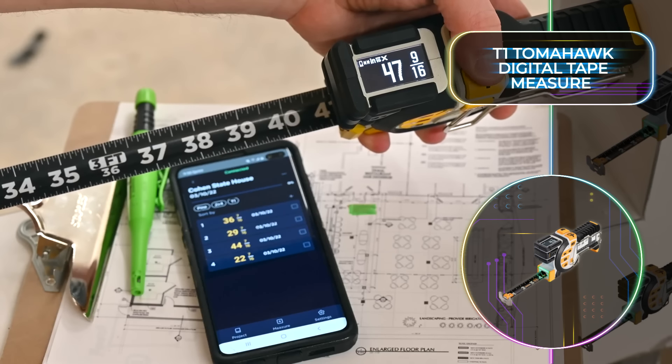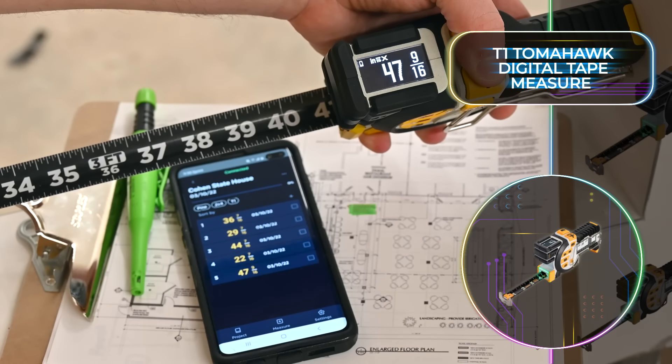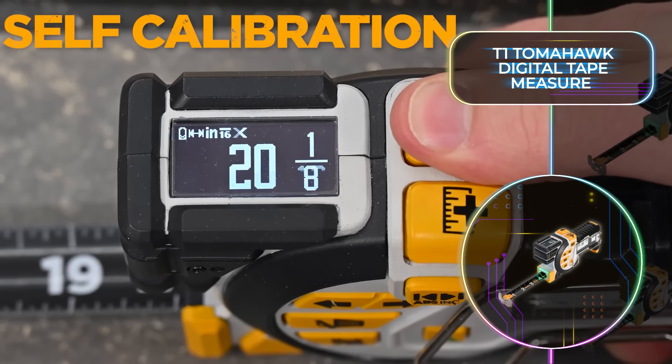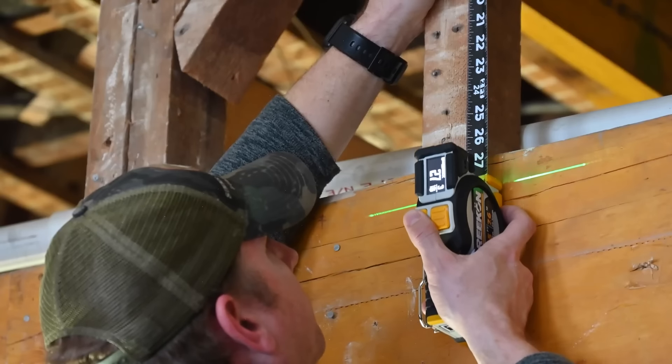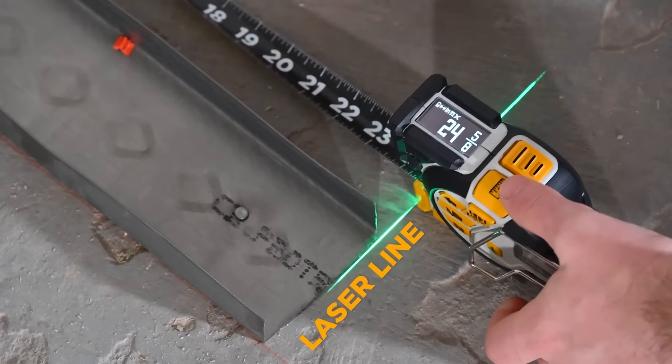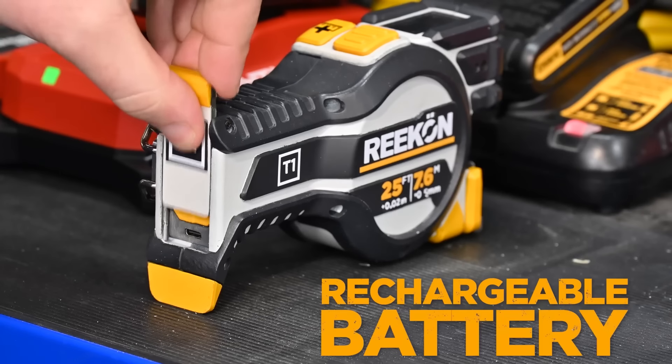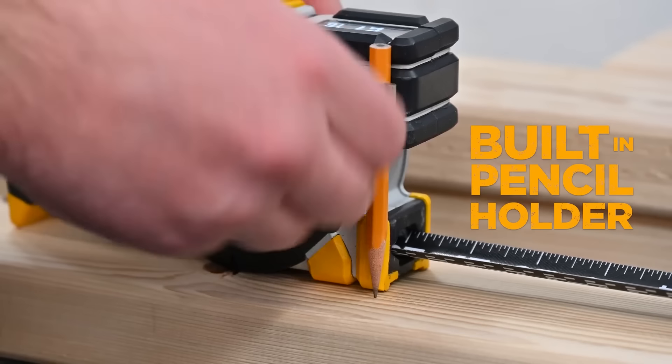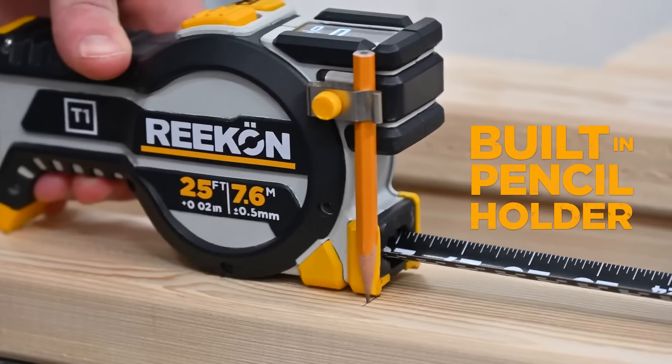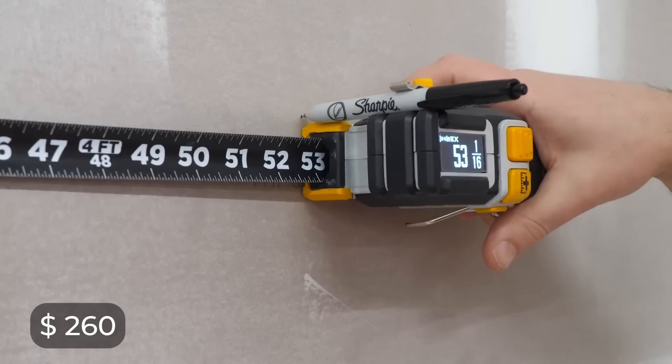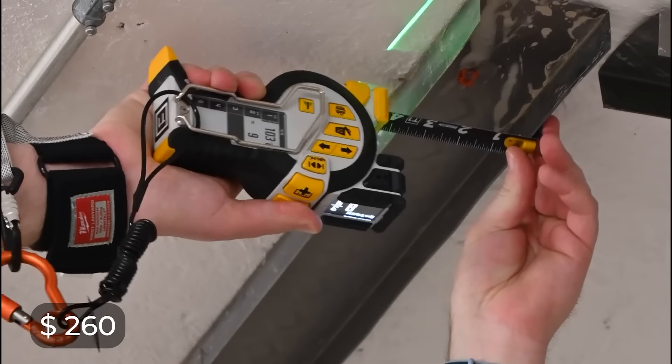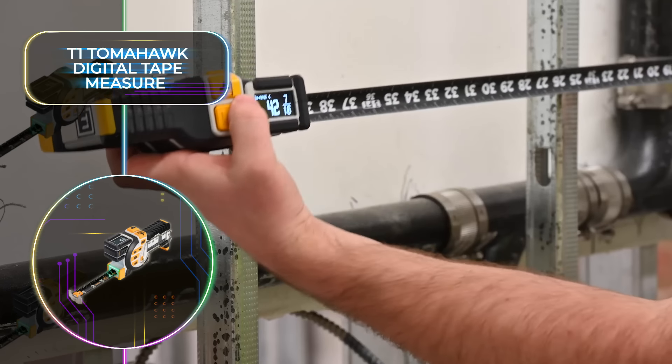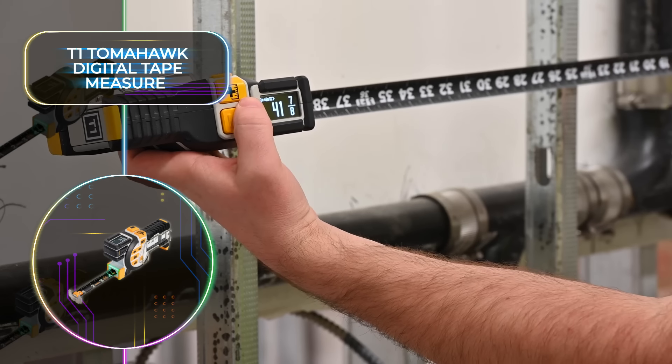But it gets even better. With Bluetooth connectivity to a mobile app, users can seamlessly transfer data for further calculations. With self-calibration, laser alignment, and an intuitive indication system, precision is guaranteed every time. The T1 Tomahawk comes complete with a holder for pencils and pens, ensuring you have everything you need at your fingertips, all for only $260.